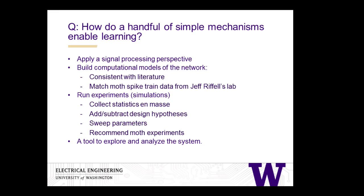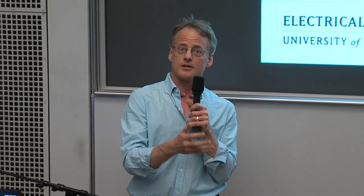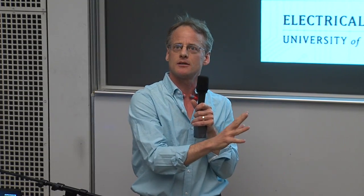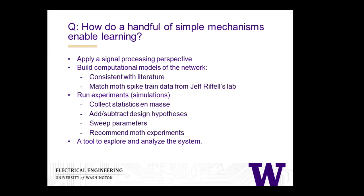Two rules: first, we honor what's known about the system in the literature — which is like the parable of blind people touching an elephant, with lots of different experimenters and some disagreement. Second, we have the advantage of actual data from Jeff Riffell's lab in biology. They have real moths, give them real odors and real sugar to learn, and read actual spike trains from those neurons. Whatever our models do, they must match what reality shows in the moths — a reality check that keeps our model from becoming purely theoretical.